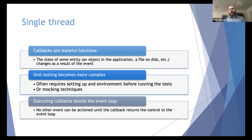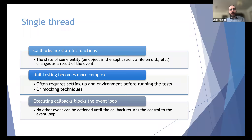In single-threaded applications, callbacks are stateful functions — they may accept inputs but do not return anything. After pushing a button, a function executes but nothing comes back to the event loop from that function. They change the state of something — part of the GUI, a file on disk, or something sent over the internet. The result of an event is always a change of state of the application.